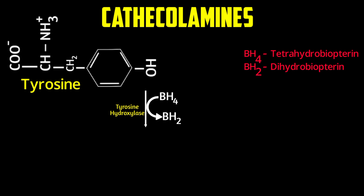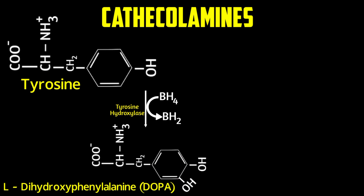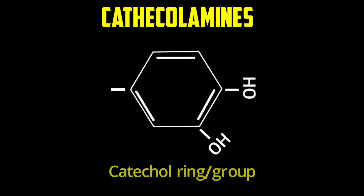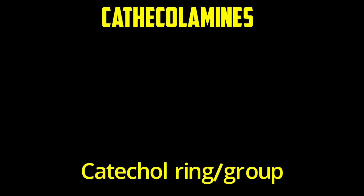Tyrosine hydroxylase requires BH4 (tetrahydrobiopterin). The product formed is L-DOPA — dihydroxyphenylalanine. The difference between phenylalanine and tyrosine is one OH group; when you add another adjacent OH it becomes dihydroxyphenylalanine, which is DOPA.